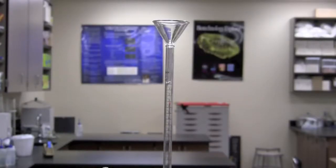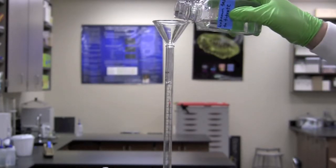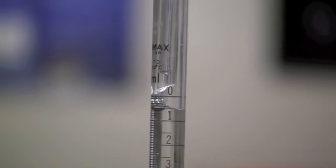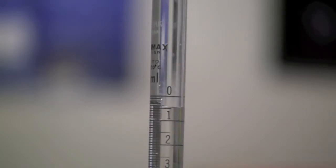Using a funnel or pipette, fill the burette with the base of unknown concentration. In this case we are using a sodium hydroxide solution. The final amounts can be added drop by drop using a pipette.